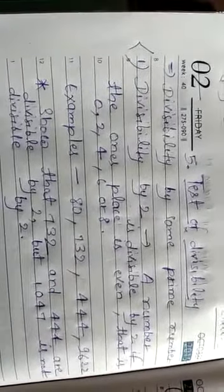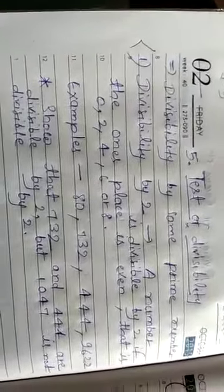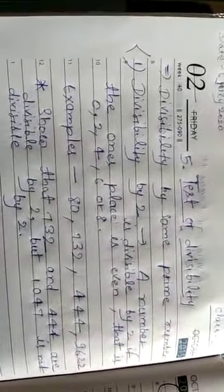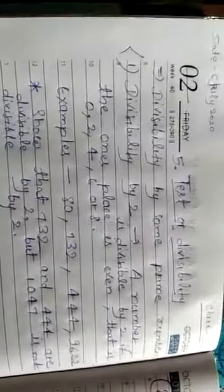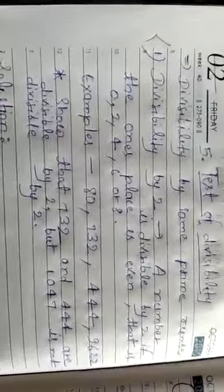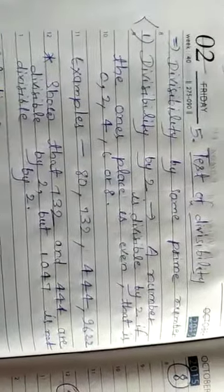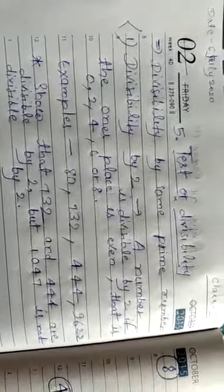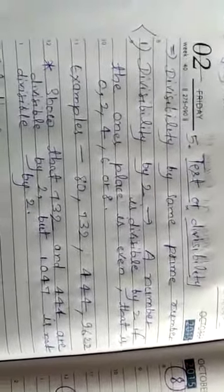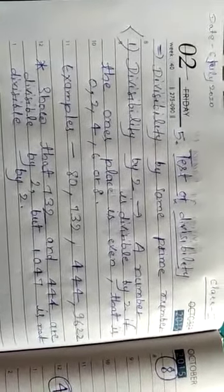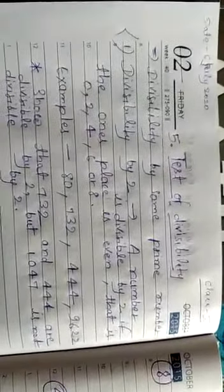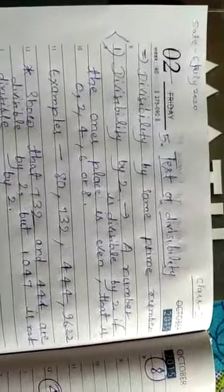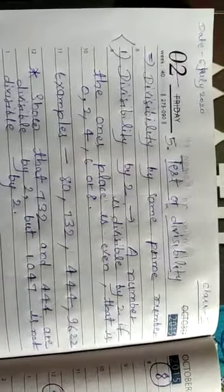First of all students, I am going to explain divisibility by some prime numbers. So firstly, I want to introduce prime number. What do you mean by prime numbers? Prime number means a counting number other than one. A counting number is a prime number if it has no factors other than one and itself. For example, you can take 2, 3, 5, 7, 11, 13, 17, 19 etc. All these numbers are prime numbers.